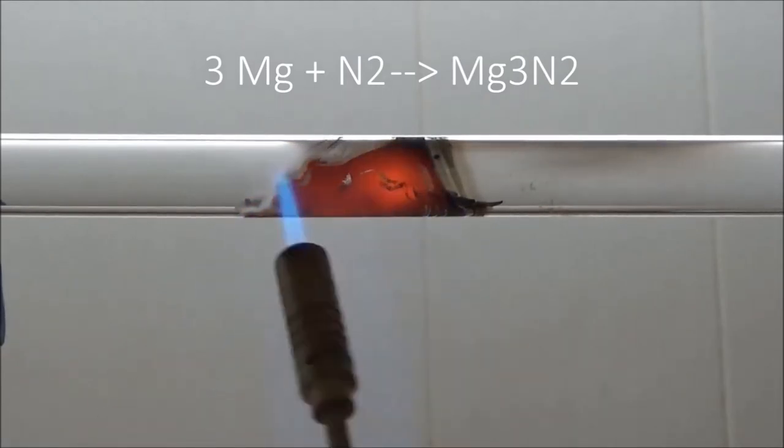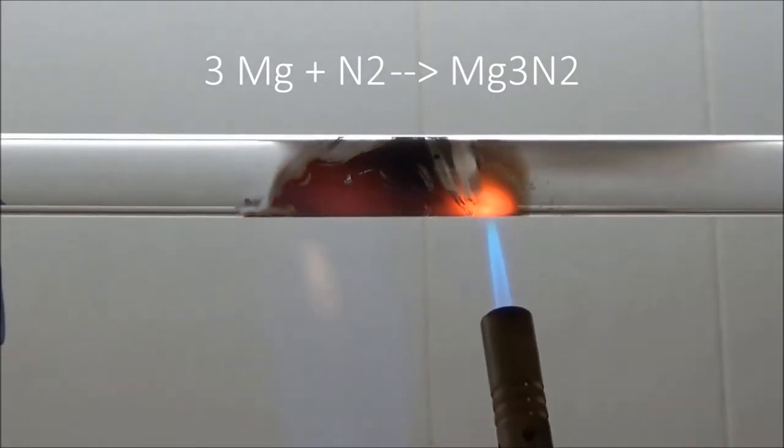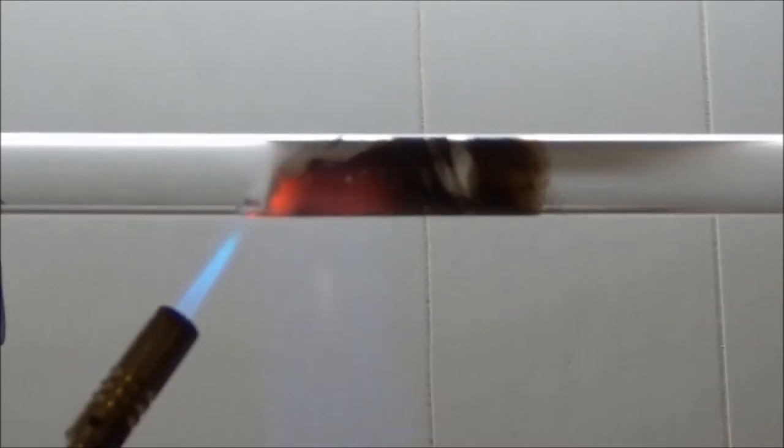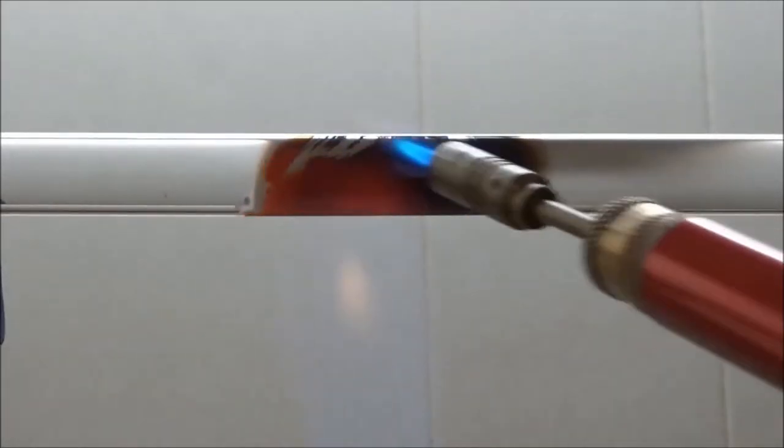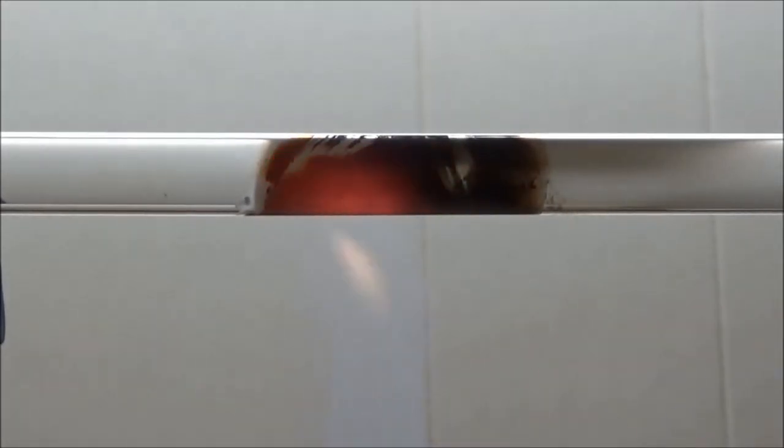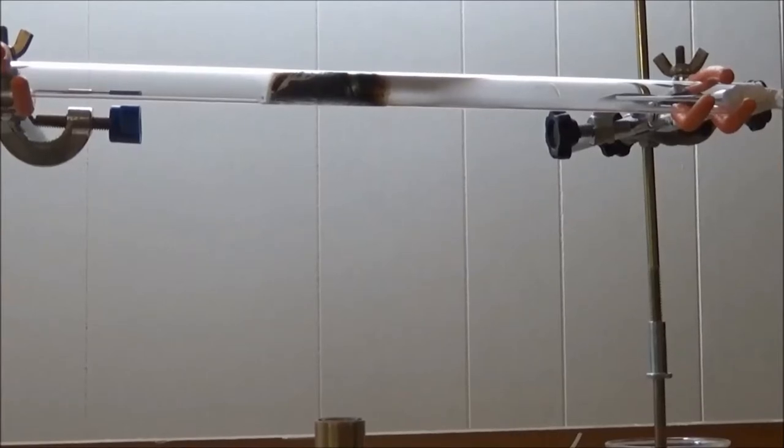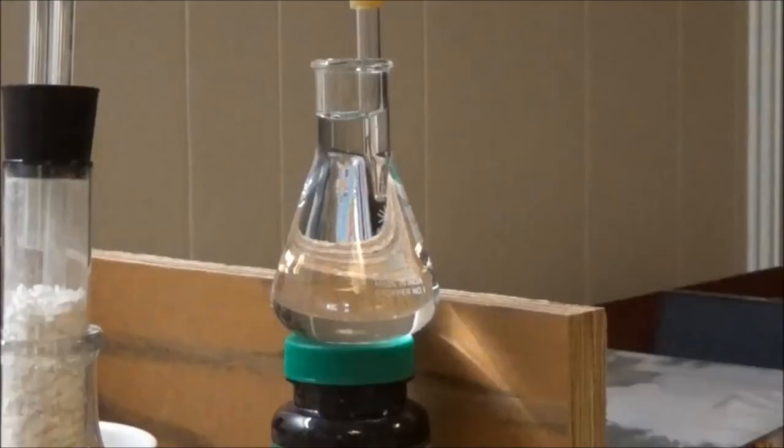I lit a second torch to get the magnesium very hot. After 10 minutes, I turned off heating and let the tube cool under a flow of nitrogen.